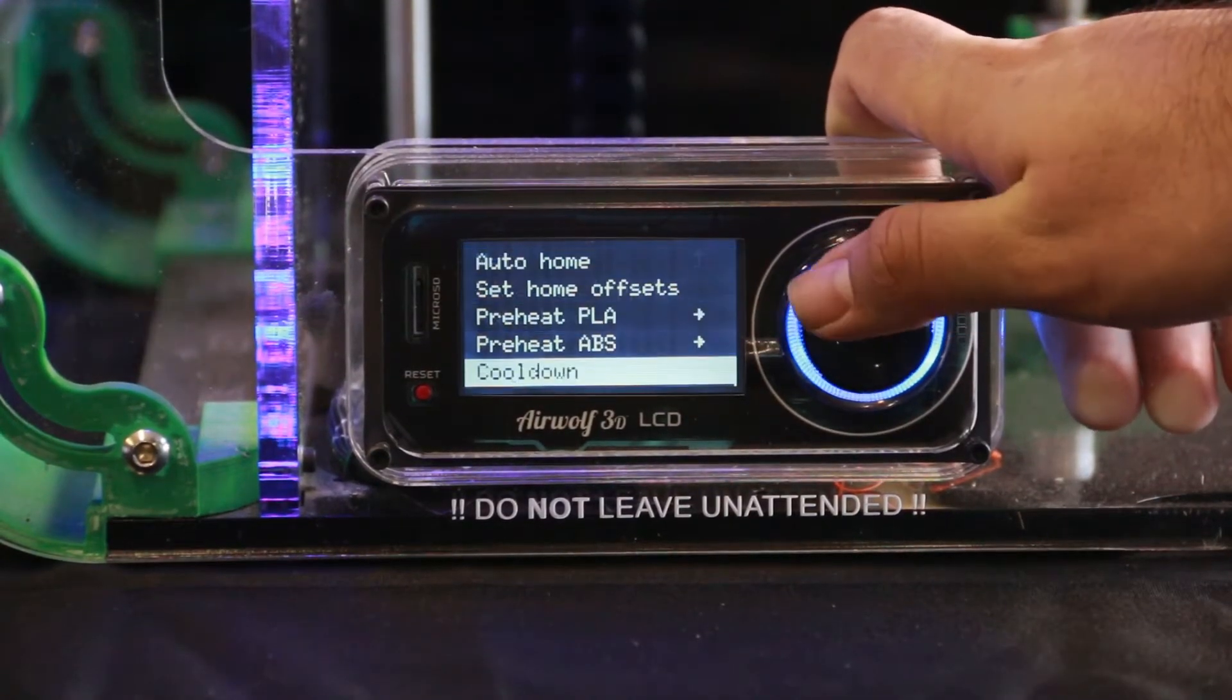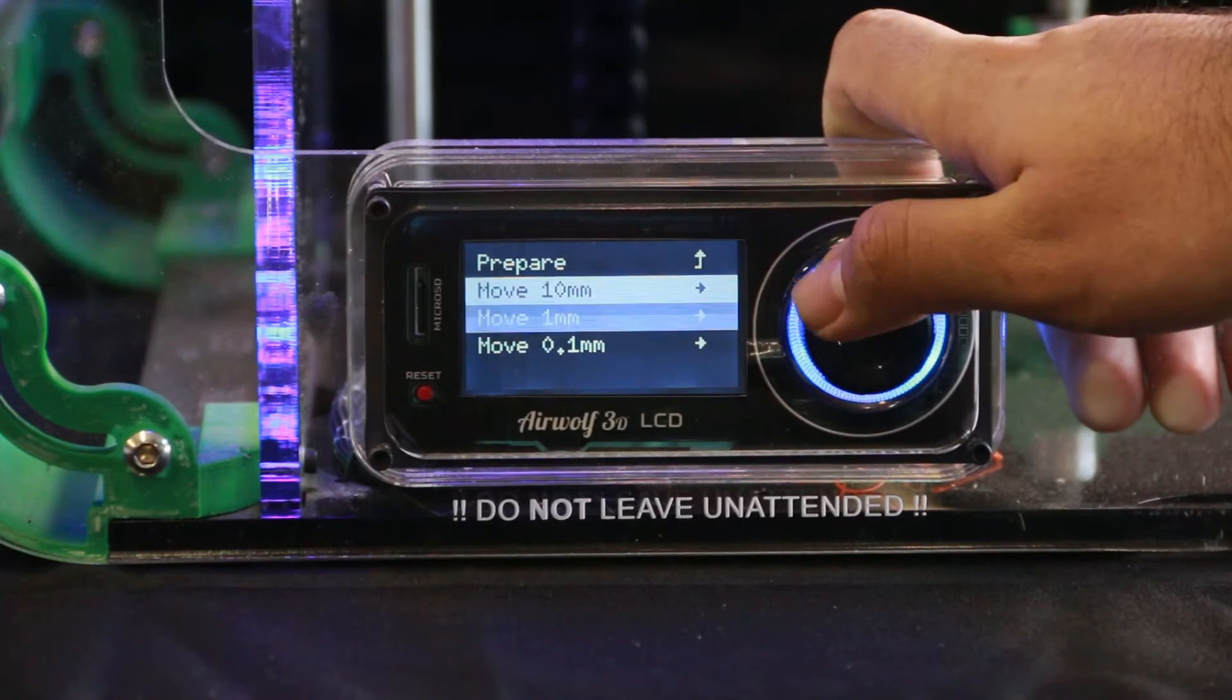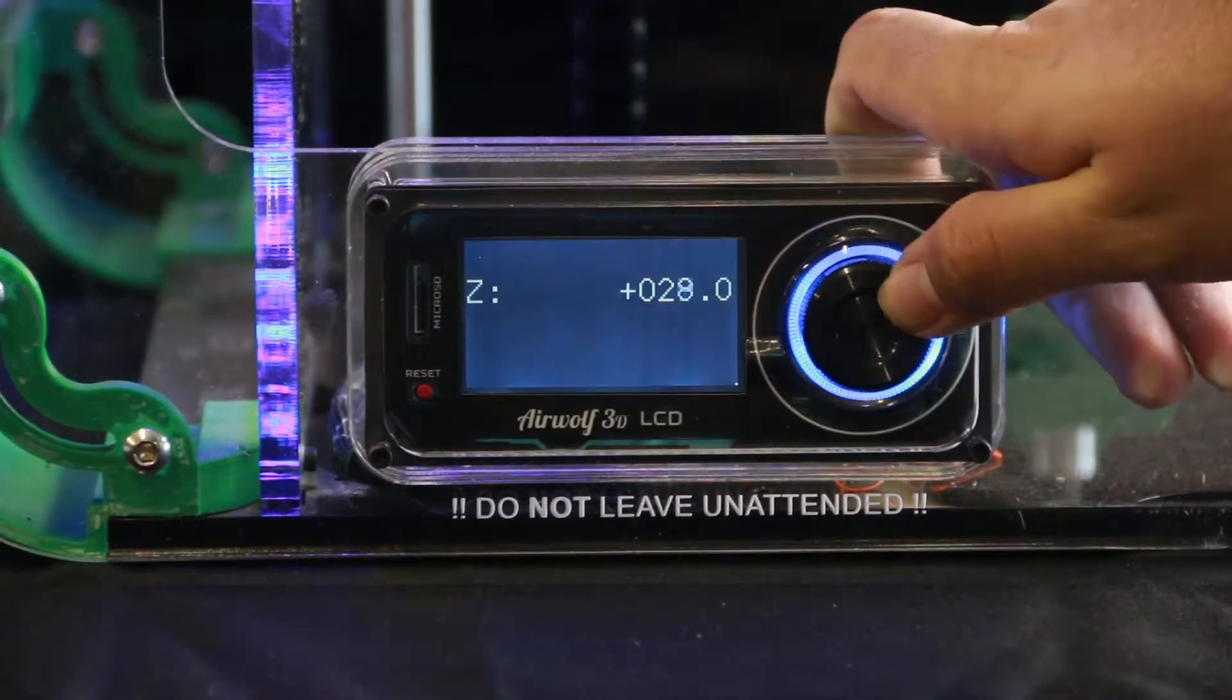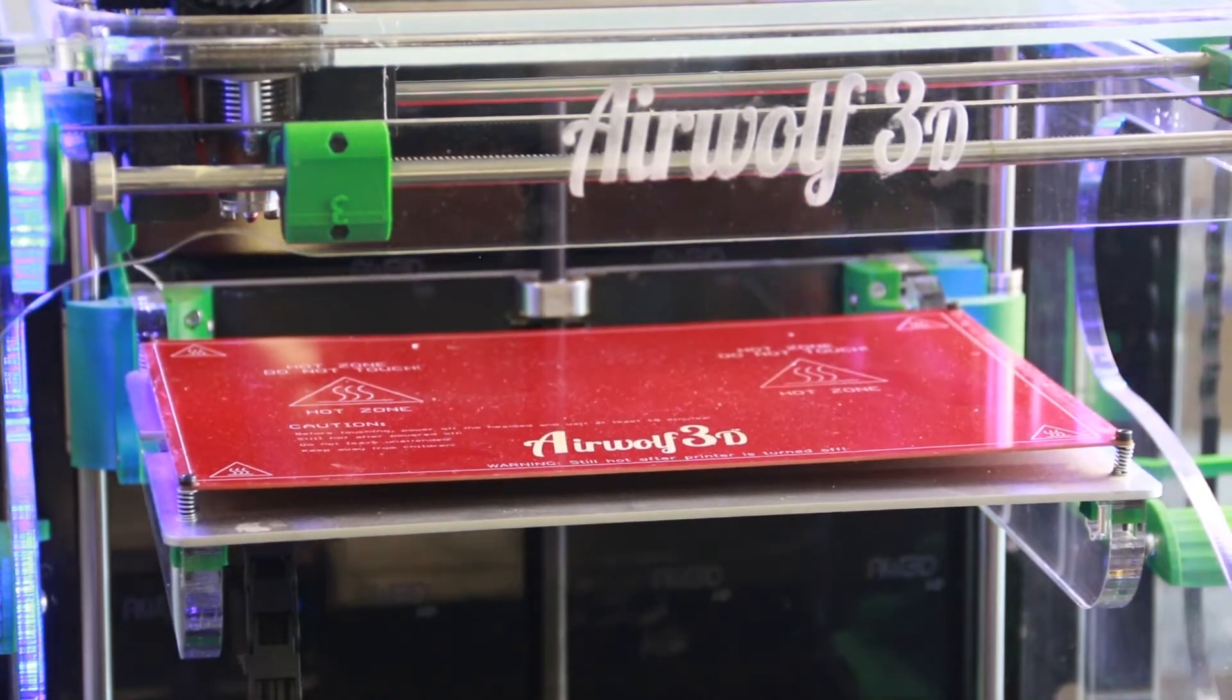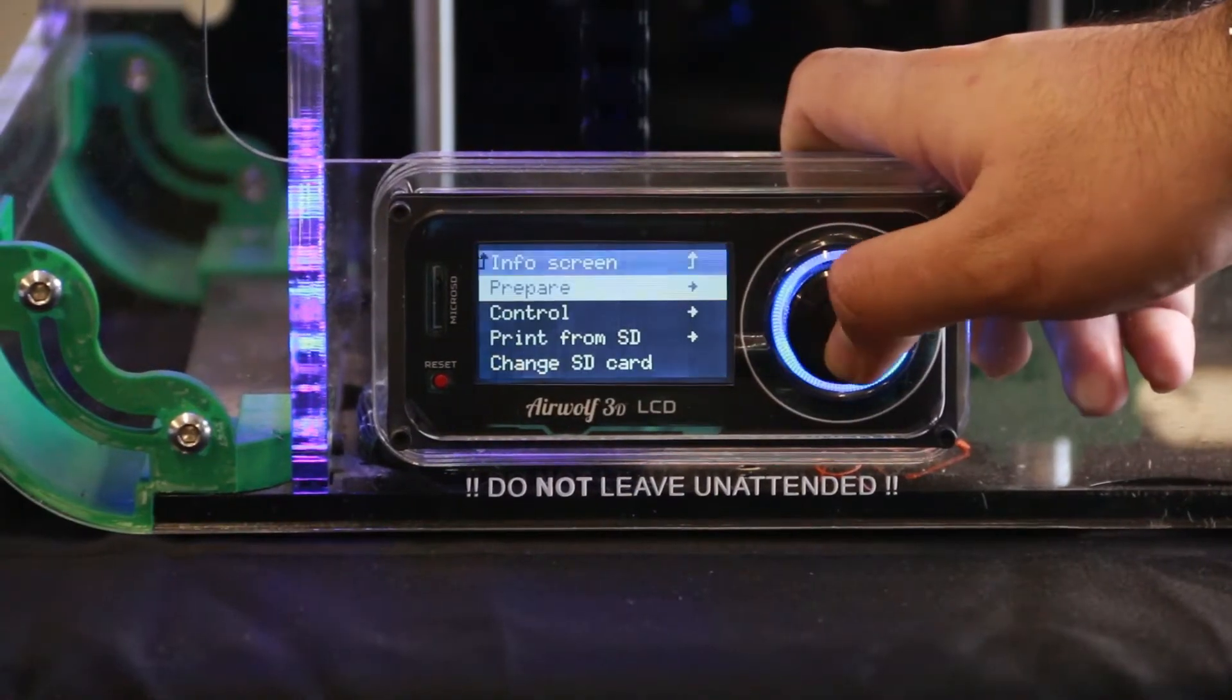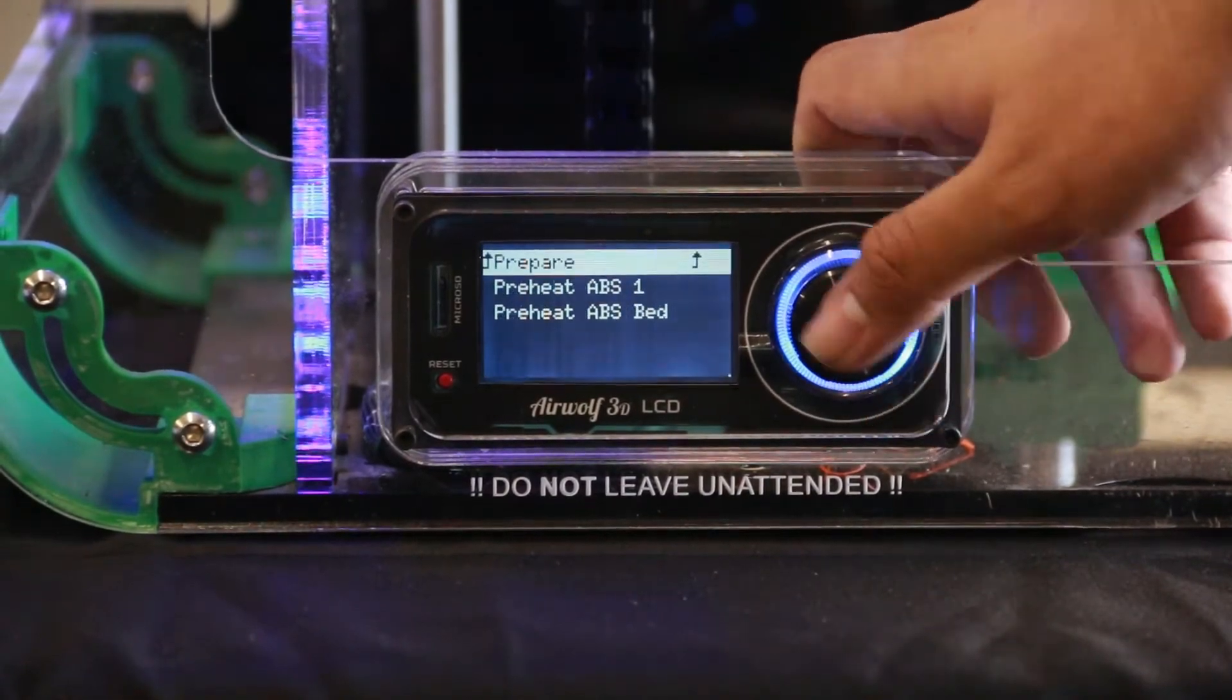Using the LCD, navigate to the move axis command and move the bed down about 10 to 20mm. On the LCD, select the preheat ABS feature.